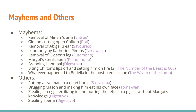The mayhems that occurred were the removal of Miriam's arm, Gideon cutting open Chilton, removal of Abigail's ear, lobotomy by Mason — he's the bee lady with the honey — removal of Gideon's leg, Margot's sterilization, branding Hannibal and biting Chilton's lips off and setting him on fire — that's actually two — and whatever happened to Bedelia in the post-credits scene.